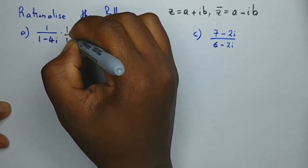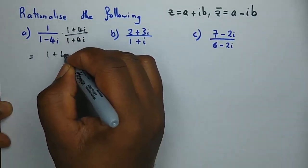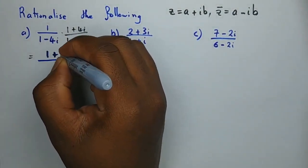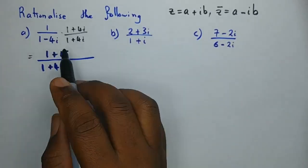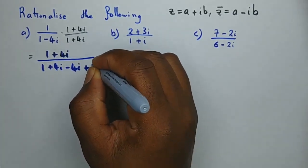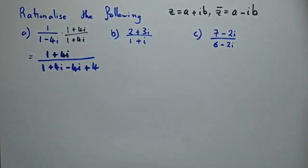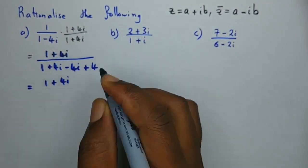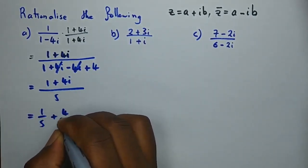Multiplying numerator and denominator by the conjugate 1 plus 4i: in the numerator, 1 multiplies with everything giving 1 plus 4i. In the denominator: 1 times 1 is 1, 1 times 4i is 4i, negative 4i times 1 is negative 4i, and negative 4i times 4i gives positive 16 — because 4 times 4 is 16 but i² is negative one, so two negatives cancel. The 4i terms cancel, leaving 1 plus 16 equals 17 — wait, simplified: the denominator becomes 1 plus 16 equals 17, and our final answer is 1 over 5 plus 4 over 5 i.